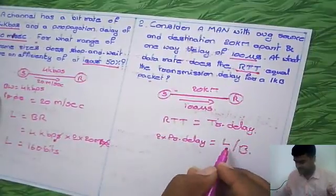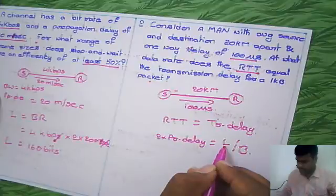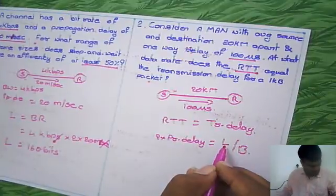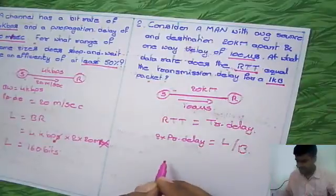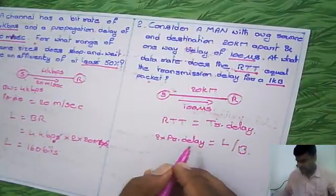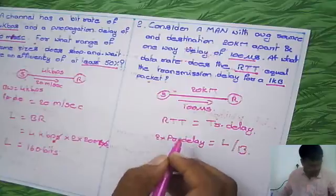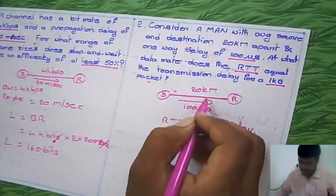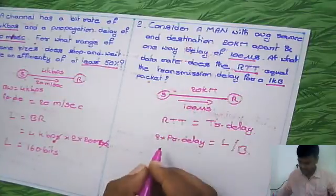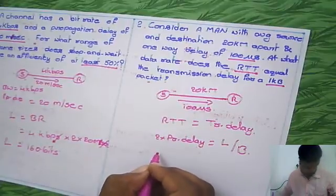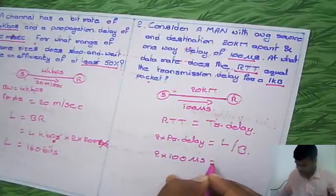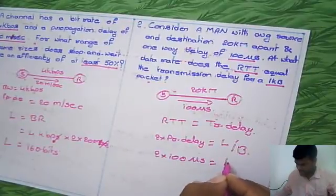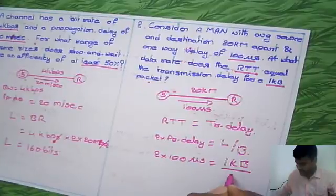We need to find bandwidth. The packet size is given here, and we have 2 times propagation delay. The one-way propagation delay is given as 100 microseconds, so 2 times 100 microseconds equals the packet length of 1 KB divided by B.